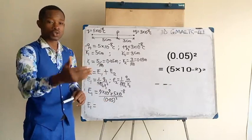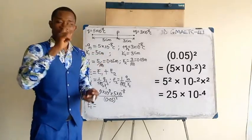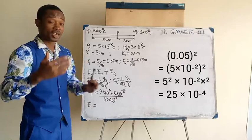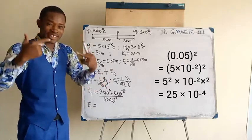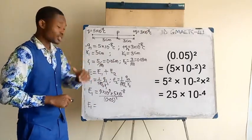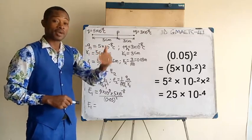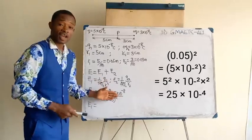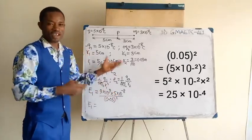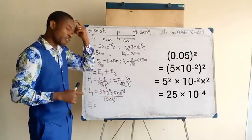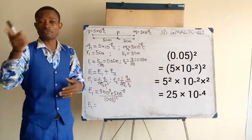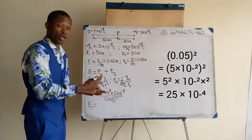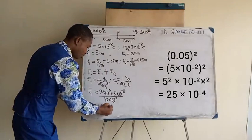The square will affect the 5, giving you 5 squared which is 25. Then the square will also affect the minus 2 power, making it minus 4 power. So 0.05 raised to the power of 2 is the same as 25 times 10 raised to the power of minus 4. Look at 9 times 5 is 45, divide by 25. Of course, 5 can reduce that to have 9 over 5. And 9 over 5, if you work it out, you should get 1 whole number 8 tenths, so 1.8.